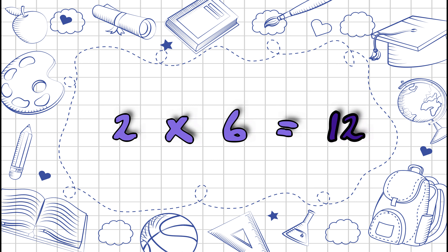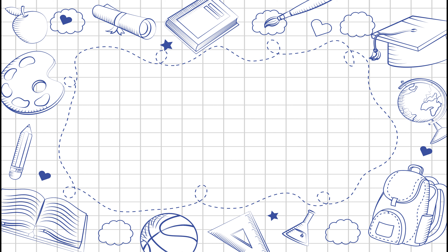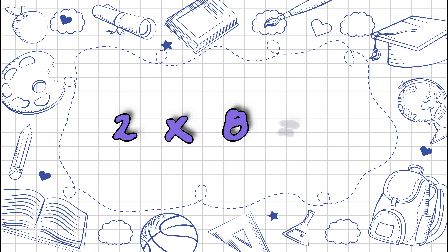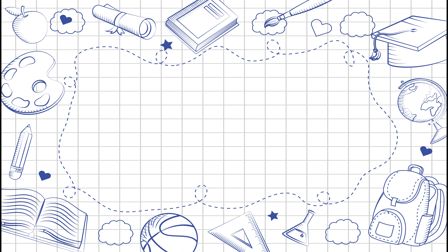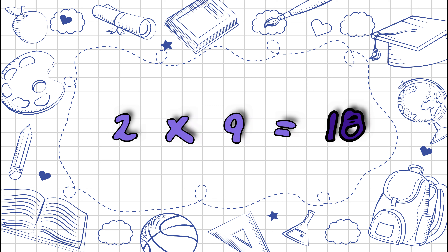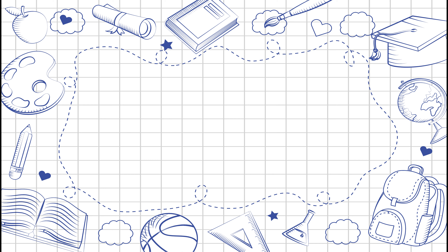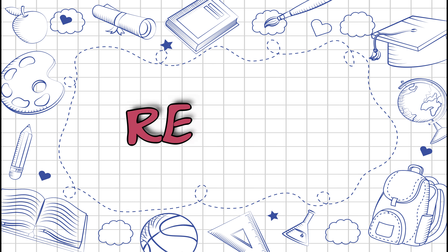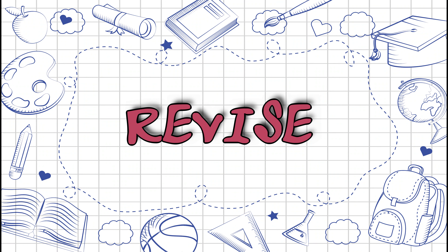Two sixes are twelve, two sevens are fourteen, two eights are sixteen, two nines are eighteen, two tens are twenty. Now let's quickly revise the table.